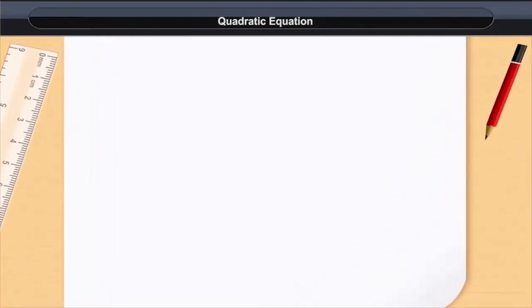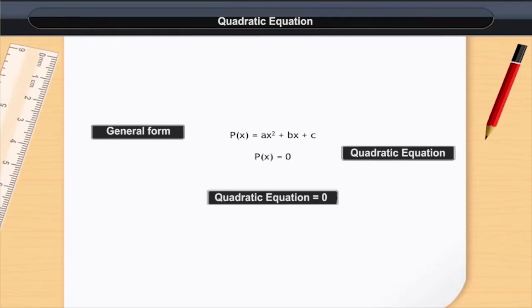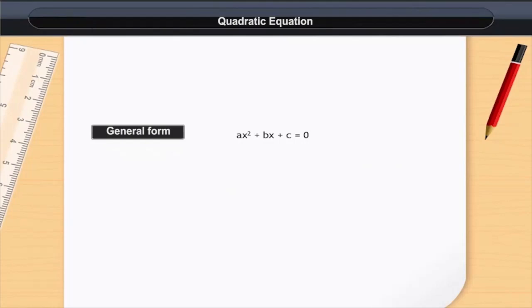Quadratic Equation general form: P(x) = Ax² + Bx + C = 0. In general, Ax² + Bx + C = 0, where A, B, C belong to R and A is not equal to 0.